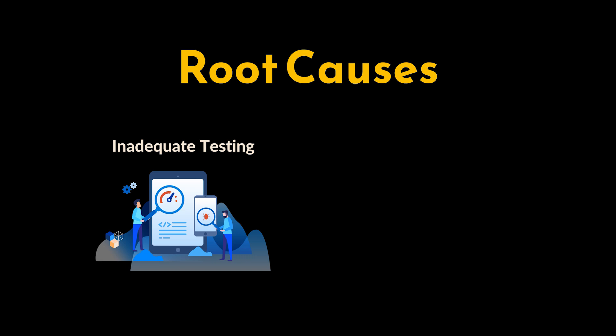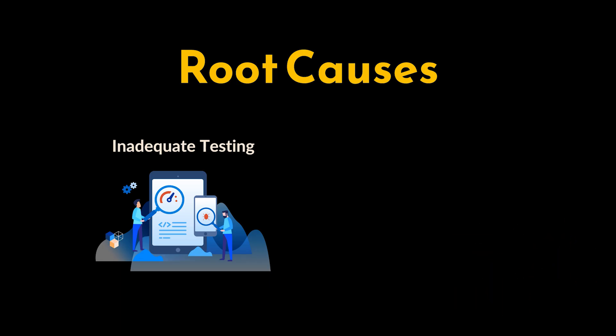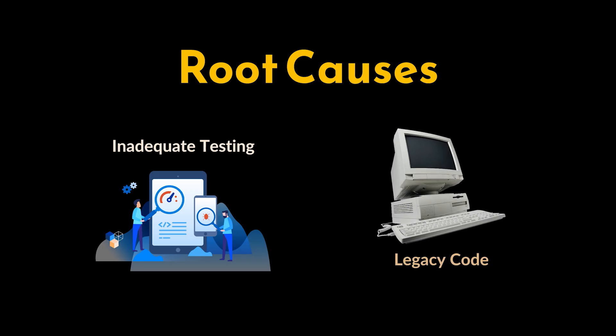Without testing, changes can introduce new issues without being detected. Finally, we can't forget legacy code as one of its main reasons. Systems that have not been maintained or modernized often suffer from this anti-pattern. Old code may not adhere to current best practices and can be resistant to changes. Now, how do we know that we are dealing with this anti-pattern? What are its symptoms?